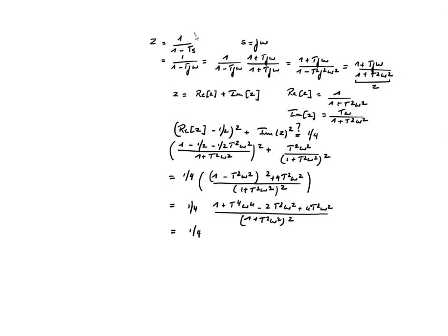To verify the mapping, we substitute S = jω into the relation and multiply numerator and denominator by the complex conjugate. Since j² = -1, we can decompose Z into real and imaginary parts. We then check whether (Re(Z) - 1/2)² + Im(Z)² = 1/4, i.e., that the locus is a circle centered at Z = 1/2 with radius 1/2.